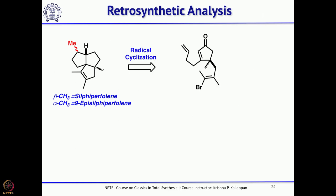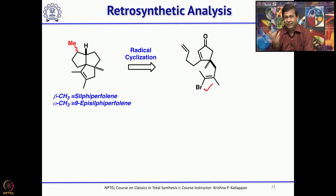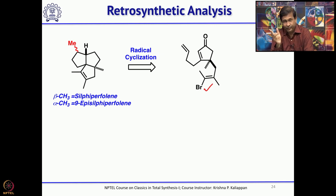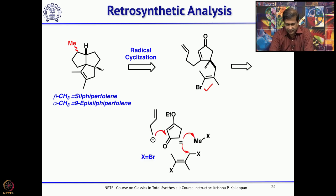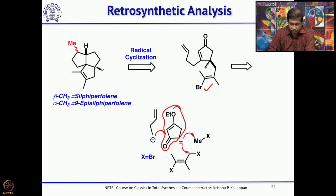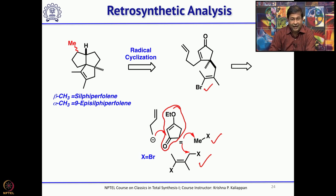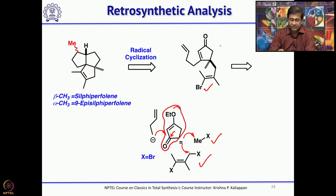In his retrosynthesis, the idea is to have a vinyl bromide that should undergo two successive 5-exo-trig radical cyclizations. Whereas in the case of capnelline and hirsutene (linear triquinanes), he used a 5-exo-trig followed by 5-exo-dig cyclization, here it is two consecutive 5-exo-trig cyclizations. This can be obtained from a particular cyclopentenone by performing two alkylations — one with methyl, the other with a substituted allyl halide — followed by Grignard addition of a 4-carbon unit onto the ketone.